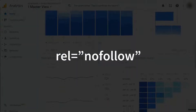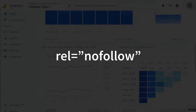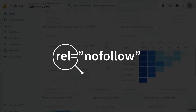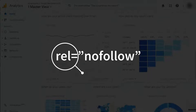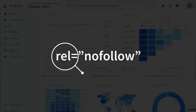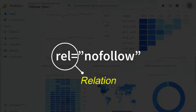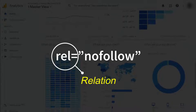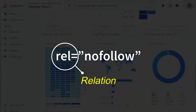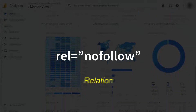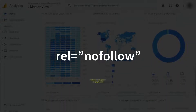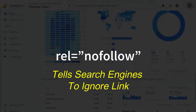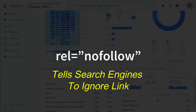Nofollow links are links that have a nofollow tag. You'll notice "rel" at the beginning of each of these, which is short for relation. When you add a nofollow tag to your link, it tells search engines to ignore the link and not use it when indexing pages.